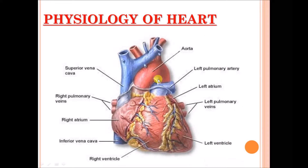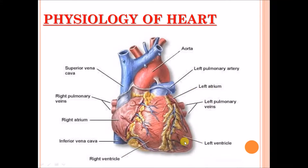This is the basic structure of a human heart. A few points indicated here: this is the superior vena cava, this is the right pulmonary veins, and these are the four main chambers — the right atrium on the upper right side, the right ventricle on the lower right side, the left atrium on the upper left side, and the left ventricle on the lower left side. Also here is the inferior vena cava, which carries deoxygenated blood from the lower side of the body.